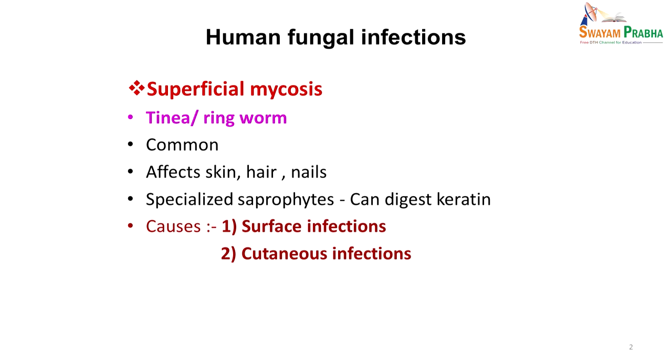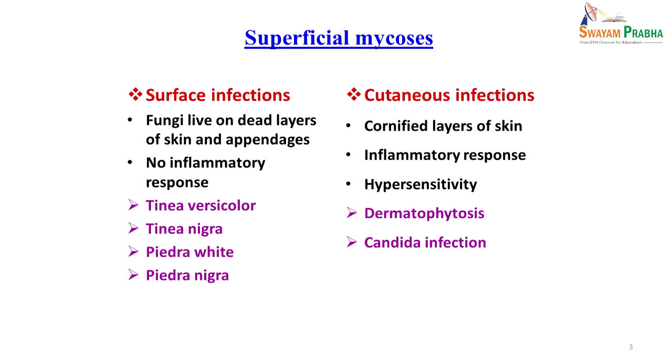Most organisms cannot digest keratin, so they cannot cause infection in intact skin. But these fungi can cause infection in intact skin because they can digest keratin and invade. They can cause either surface infections or cutaneous infections. In surface infections, fungi live on dead layers of skin, so there is no inflammatory response. In cutaneous infections, the fungi are in the cornified layers of skin, producing inflammatory response and hypersensitivity.